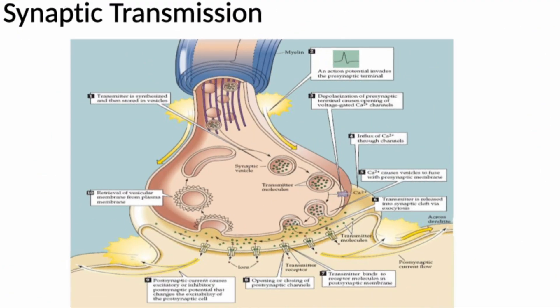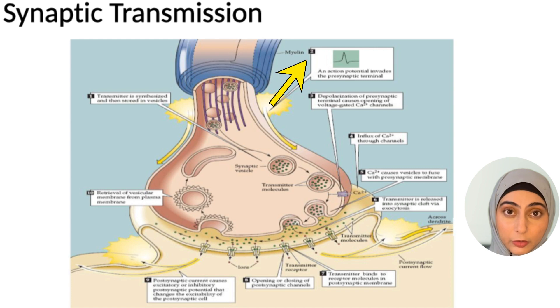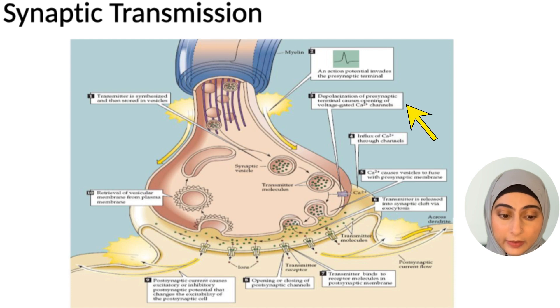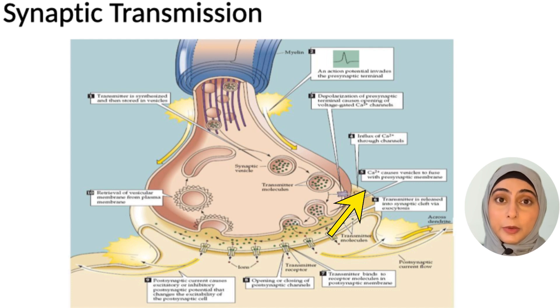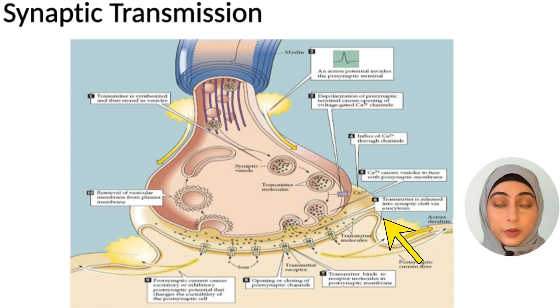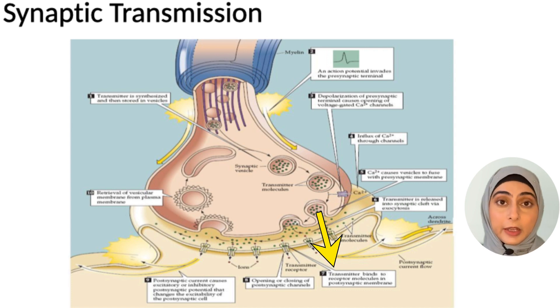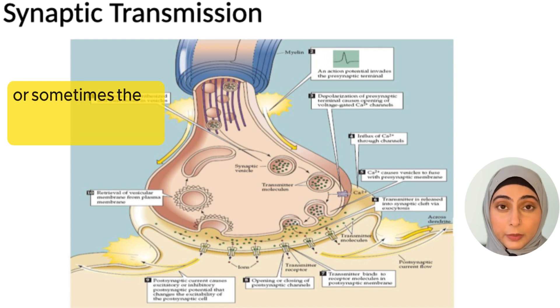Briefly revising synaptic transmission: whenever an action potential reaches the presynaptic nerve terminal, depolarization occurs there, causing opening of the calcium channels in the presynaptic terminal. The calcium influx causes fusion of the neurotransmitter vesicle with the presynaptic membrane, resulting in release of the neurotransmitter into the synaptic cleft. This neurotransmitter then occupies the receptors on the postsynaptic nerve terminal, resulting in modulation of postsynaptic transmission — either opening of sodium or potassium channels, or sometimes closure of certain channels.